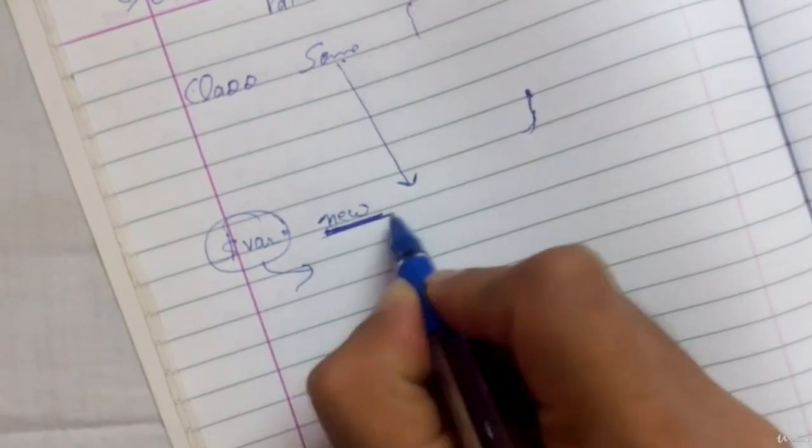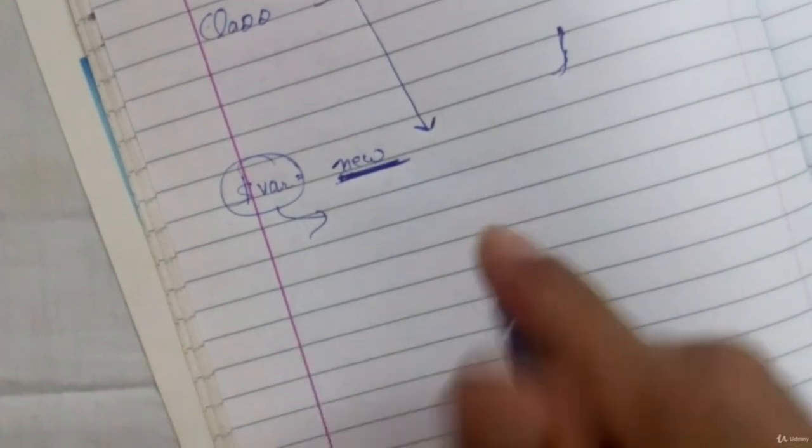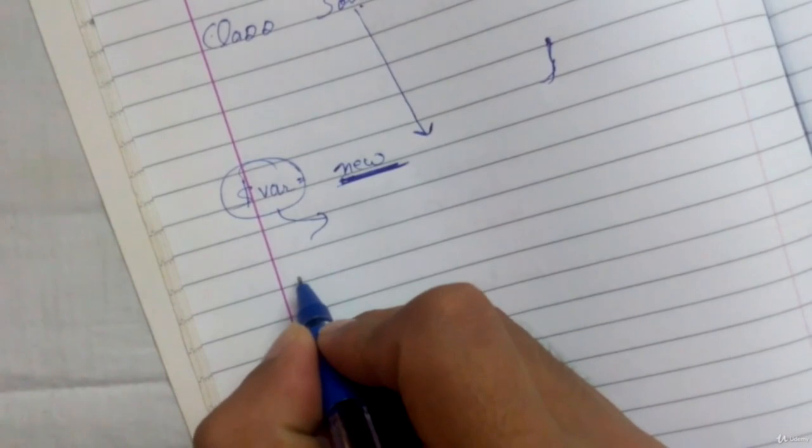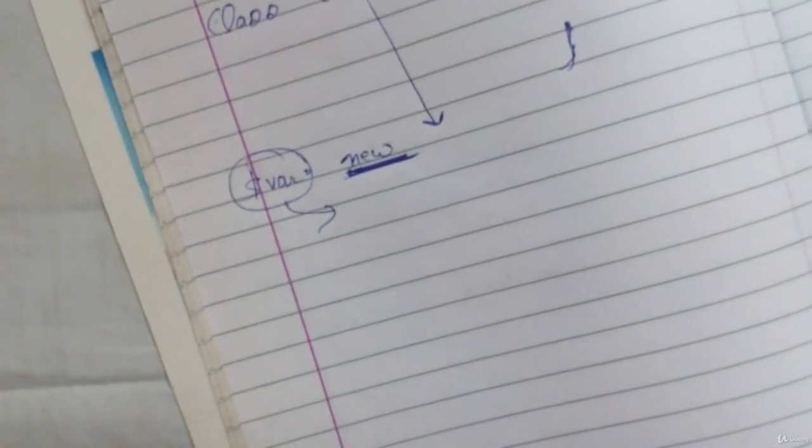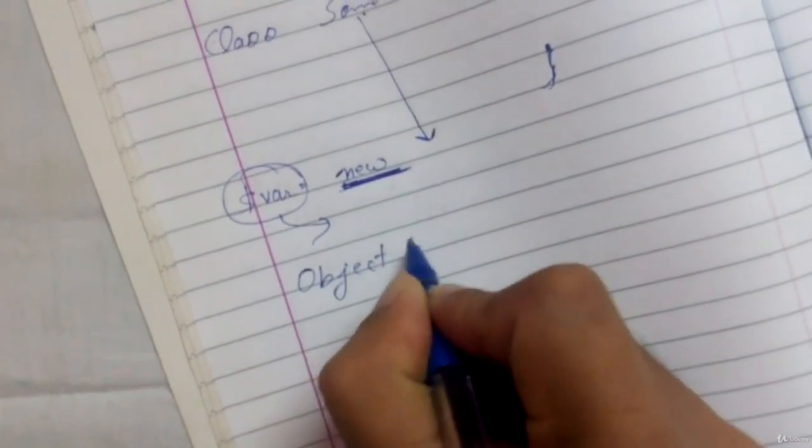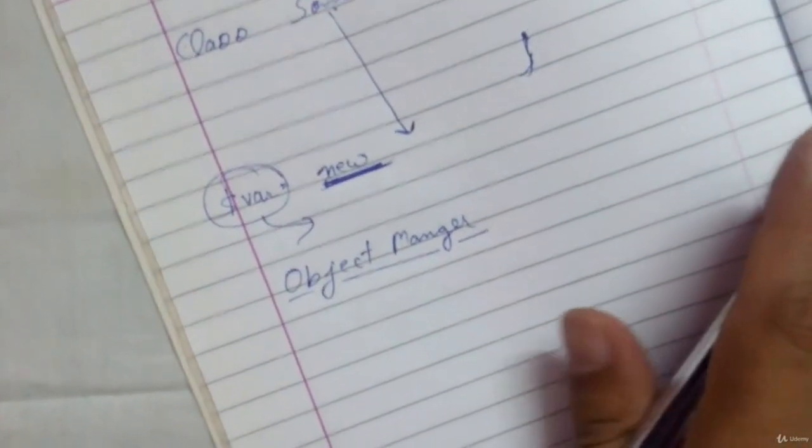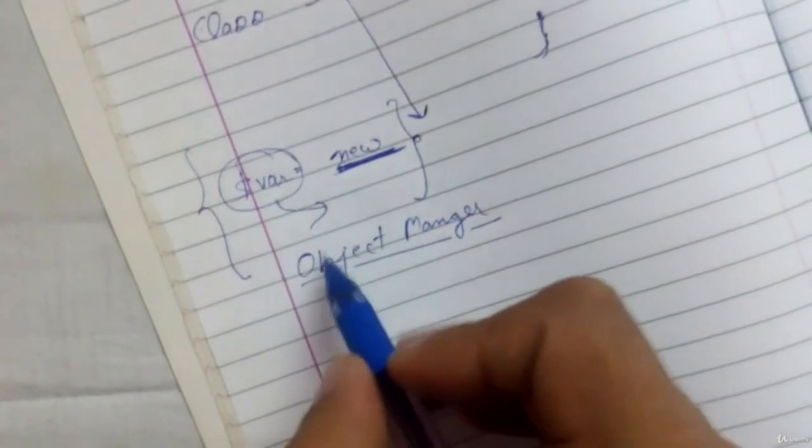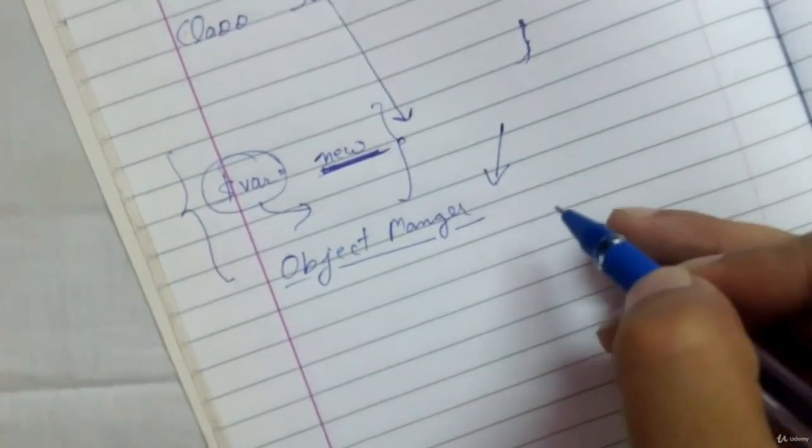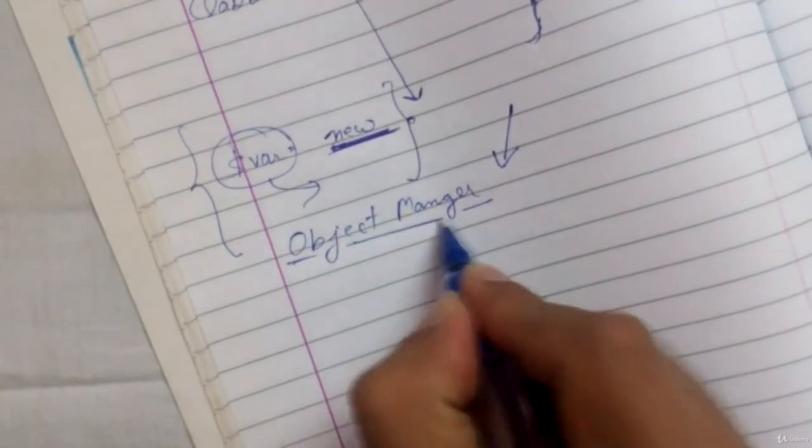So we have to ensure that there should be something done where we can use something else despite this 'new' keyword. In recent programming, we use a pattern or we use the process in which we create one class which is generally created for managing all the objects. So in Magento we call it Object Manager. It is actually a class which has been created to avoid all these 'new' syntaxes or avoid all these manual object creations, and this has been summed up in this Object Manager only.